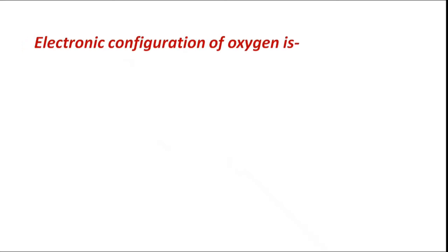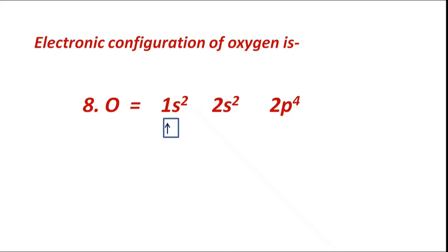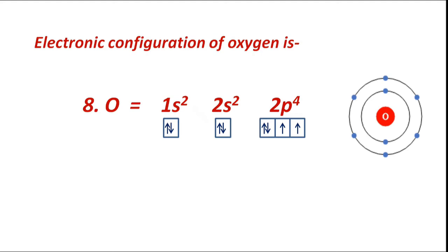The electronic configuration of oxygen is 1s2 2s2 2p4. First, electrons fill the 1s sub-level singly, then pairing occurs with electrons of opposite spin. After that, electrons fill 2s singly, then pairing occurs with electrons of opposite spin. By the same way, electrons fill all atomic orbitals of the 2p sub-level singly first, and then pairing occurs in different atomic orbitals with electrons of opposite spin, giving 1s2 2s2 2p4.